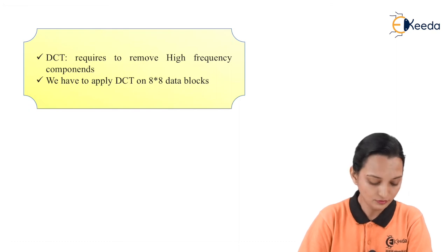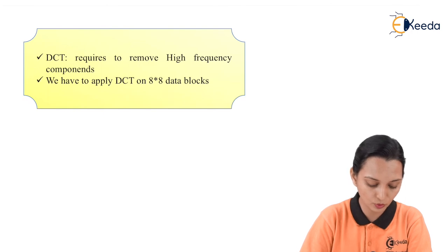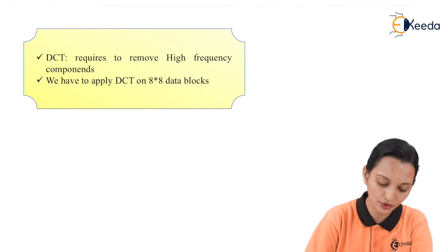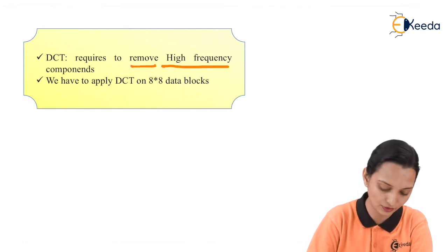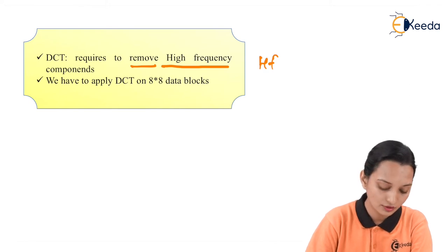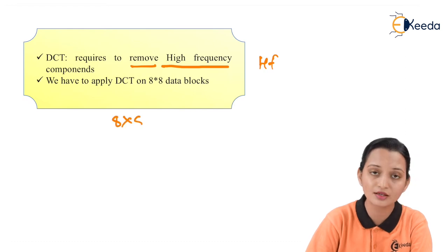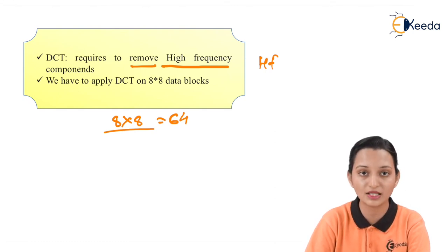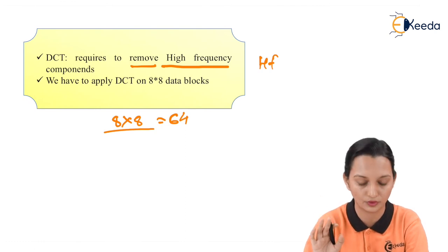The next step is to apply DCT — required to remove the high frequency component. We apply DCT on 8×8 blocks, which are able to give us 64 coefficients. On those coefficients, we apply DCT to remove the high frequency coefficients, meaning we focus on the lower frequency coefficients.